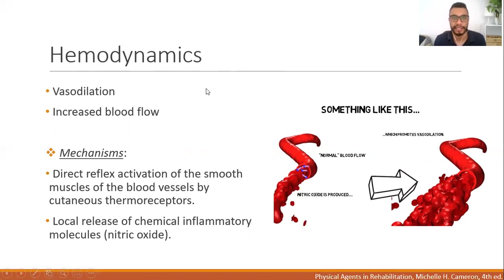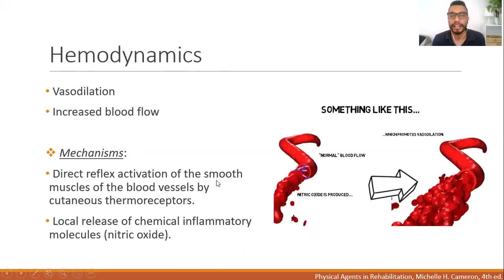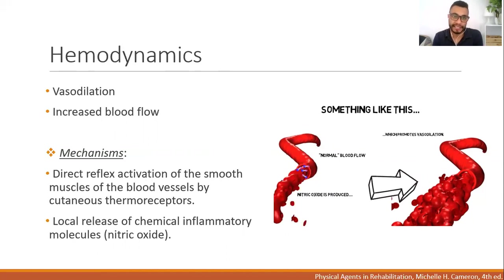The first effects concern hemodynamics — what happens in the blood vessels when we apply heat. The first response we see is vasodilation. This occurs because of a direct reflex activation of smooth muscles in the vessels, activated by cutaneous thermal receptors. Those thermal receptors in the skin detect the increase of temperature, causing a direct parasympathetic activation.